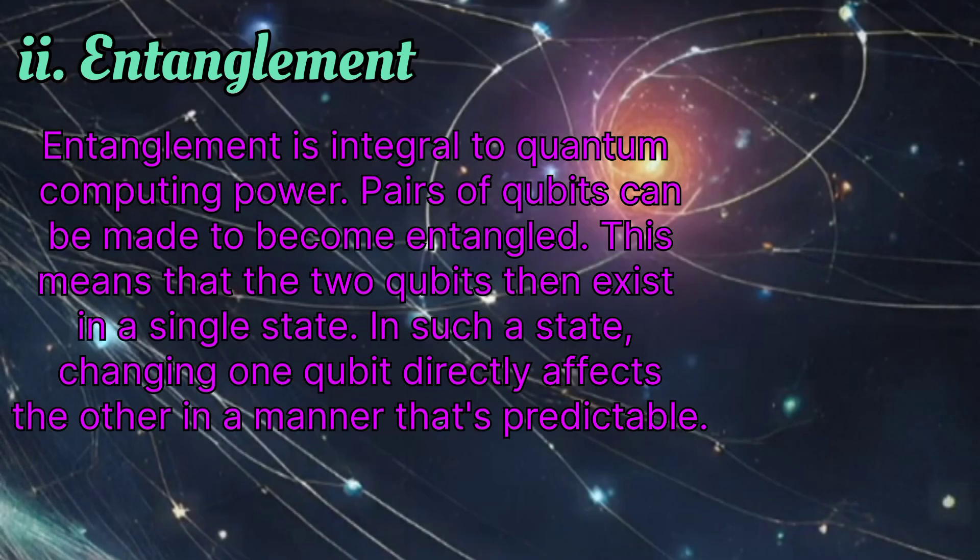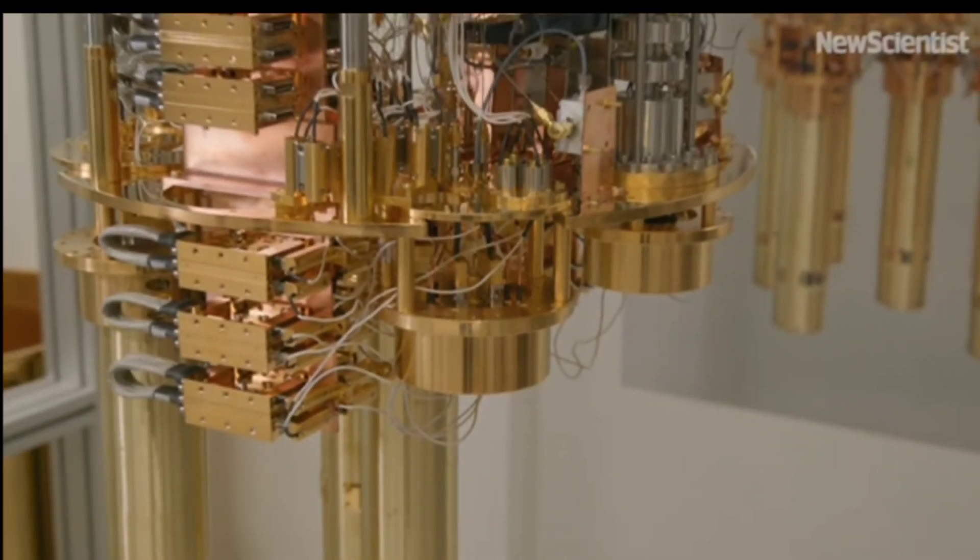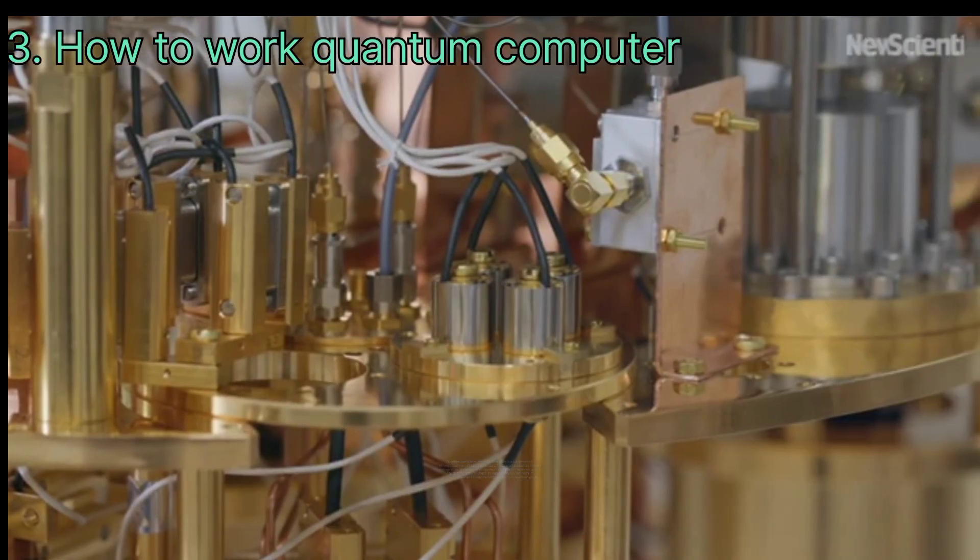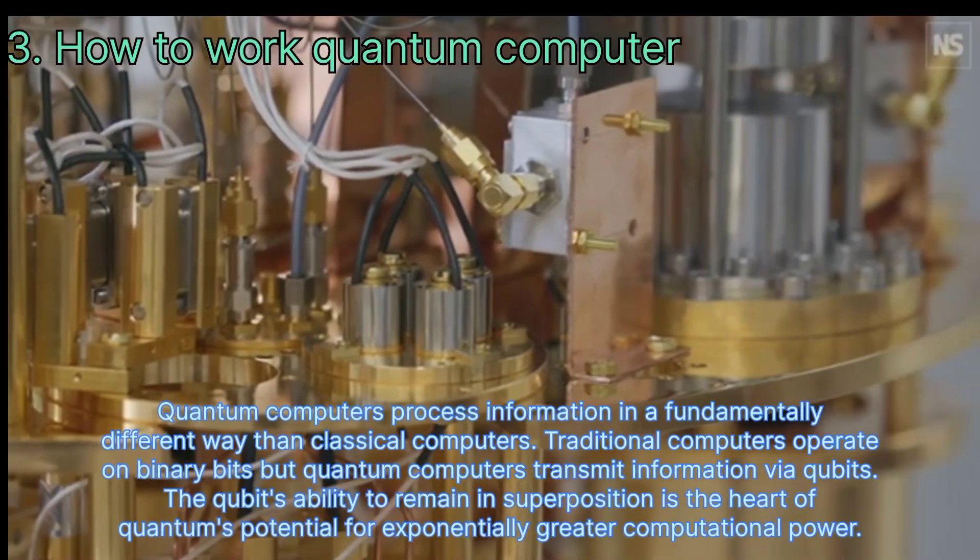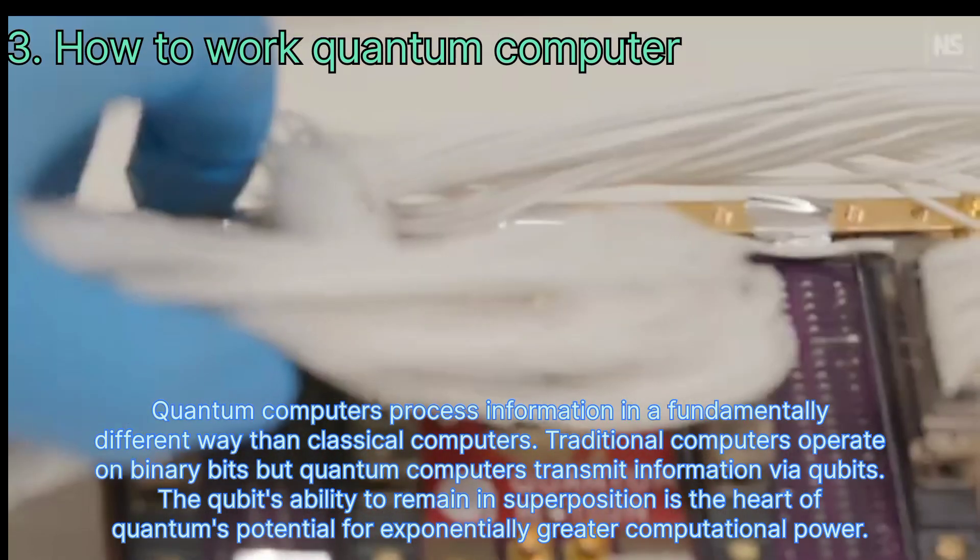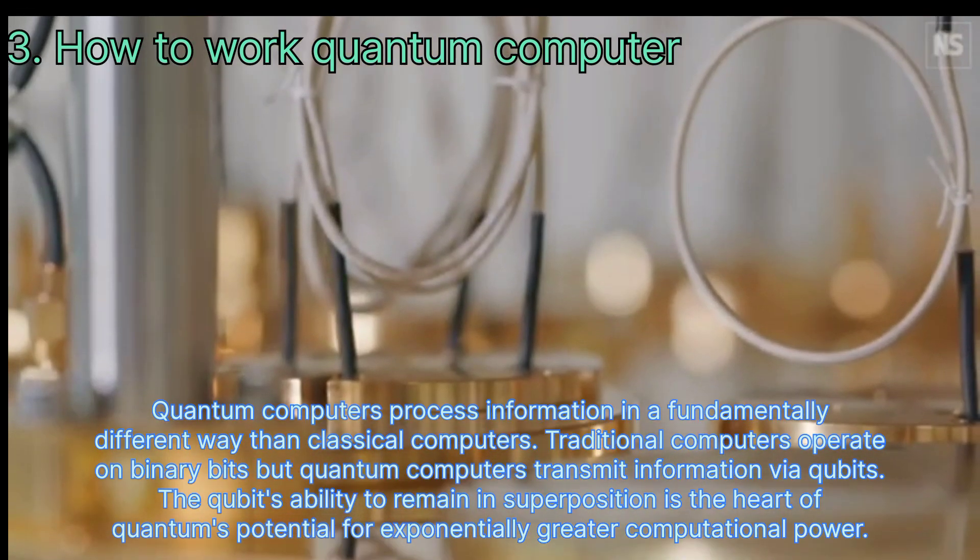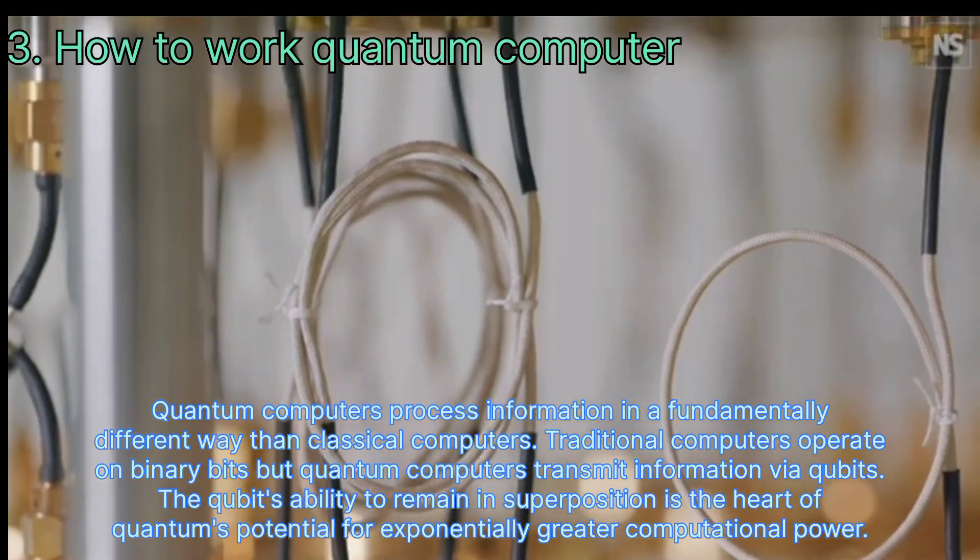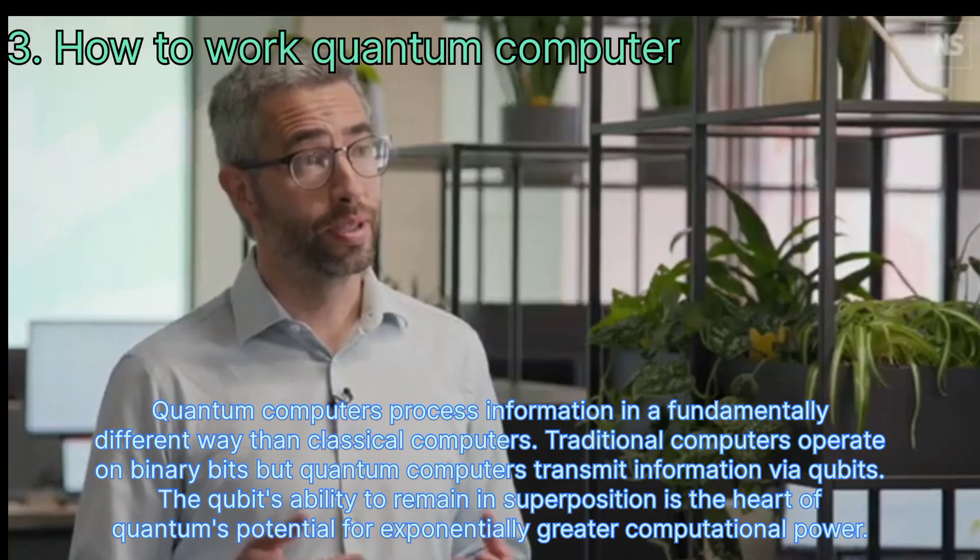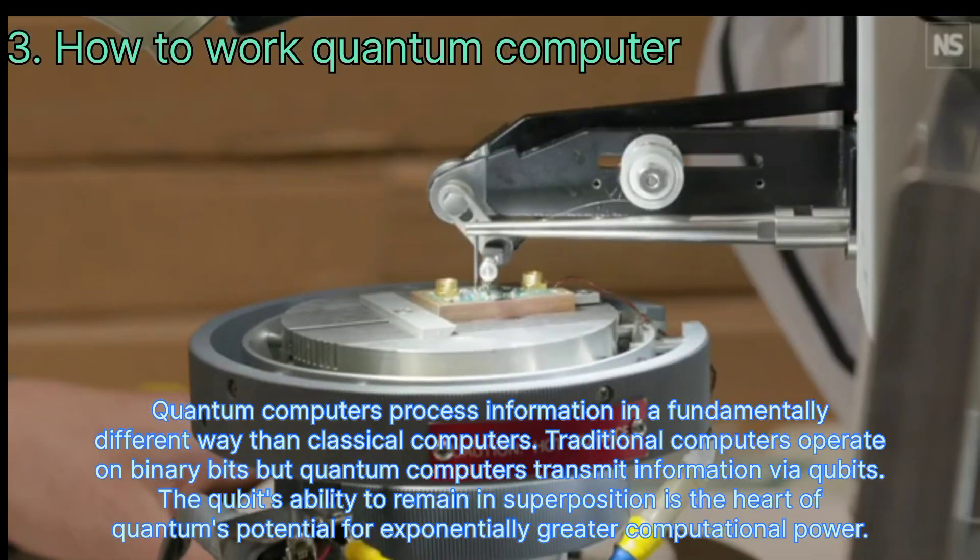How do quantum computers work? Quantum computers process information in a fundamentally different way than classical computers. Traditional computers operate on binary bits, but quantum computers transmit information via qubits. The qubit's ability to remain in superposition is the heart of quantum's potential for exponentially greater computational power.